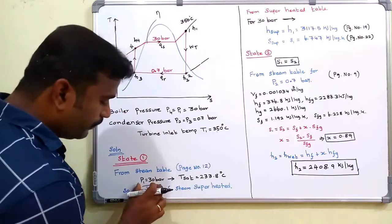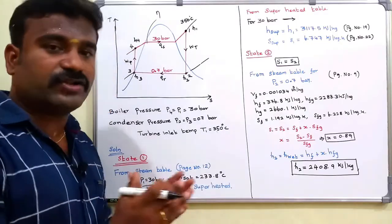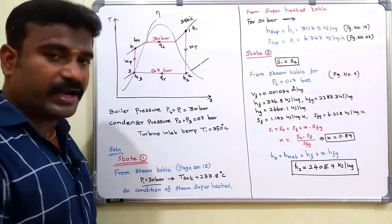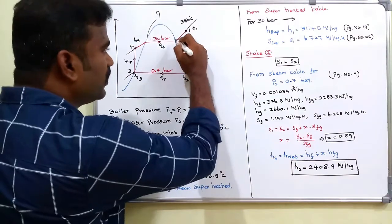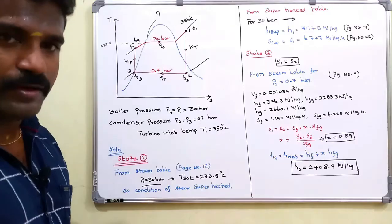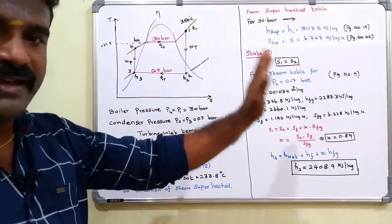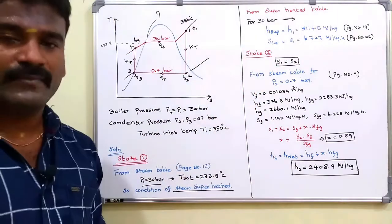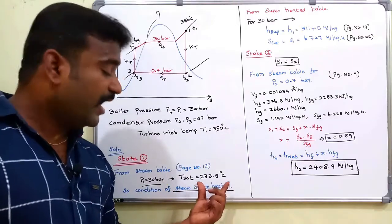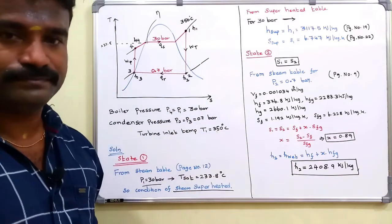In state 1, the pressure is 30 bar. Let's take page number 12 in the steam table. At 30 bar pressure, the saturation temperature is 233.8 degrees Celsius. But the actual temperature is 350 degrees Celsius, which is higher than the saturation temperature of 233.8. That means the steam at state 1 is superheated. So we go to the superheated steam table.